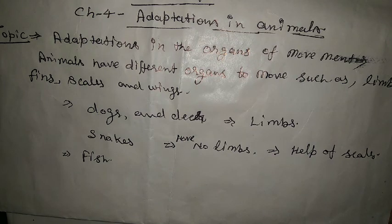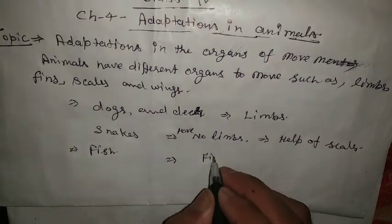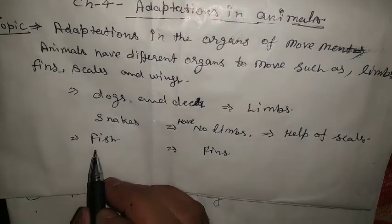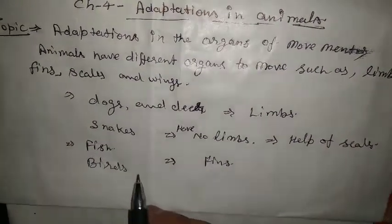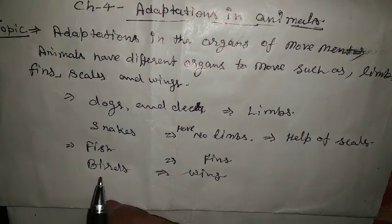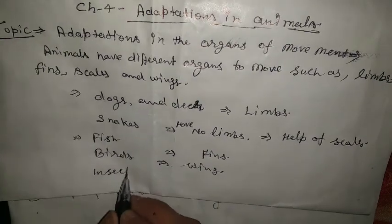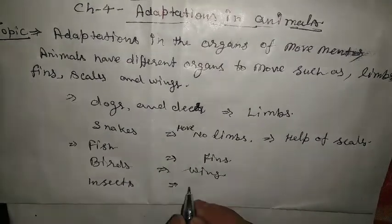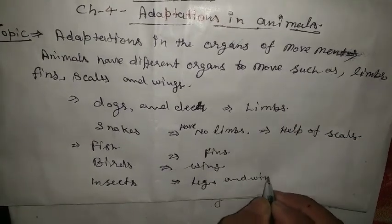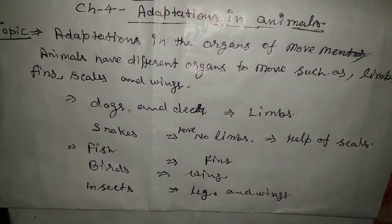Animals such as fish that live in water have fins for swimming. Birds have wings for flying, and insects have legs and wings for movement.